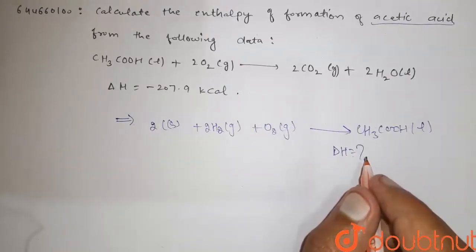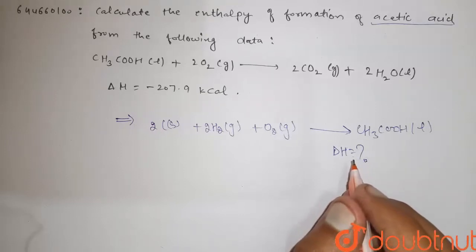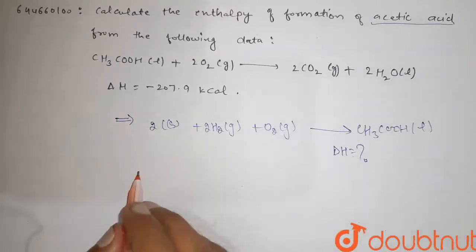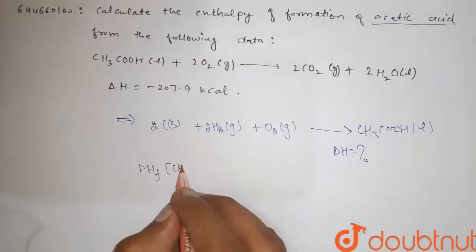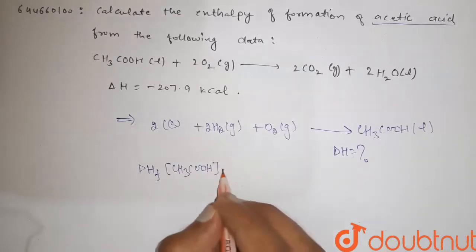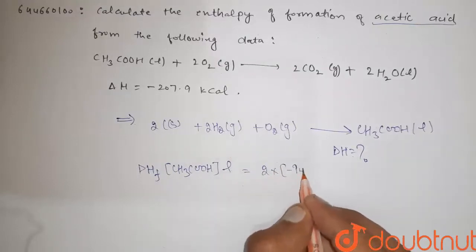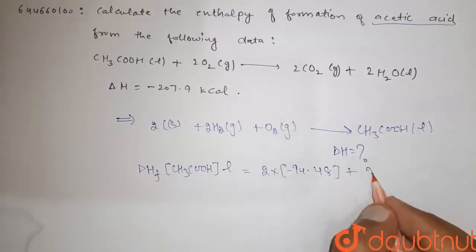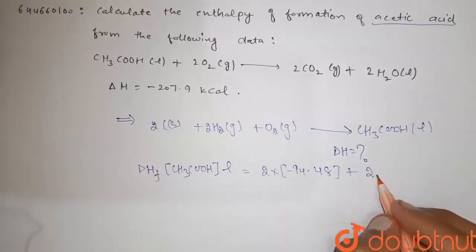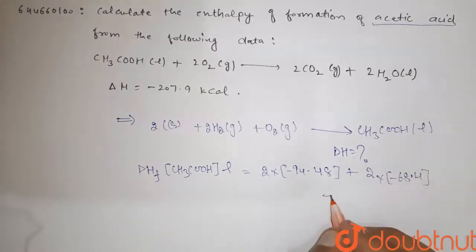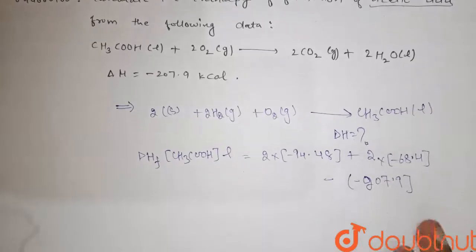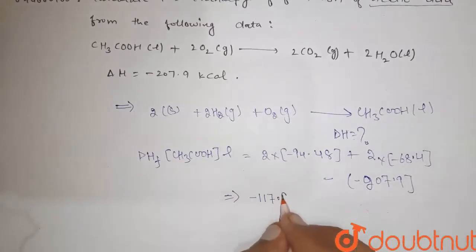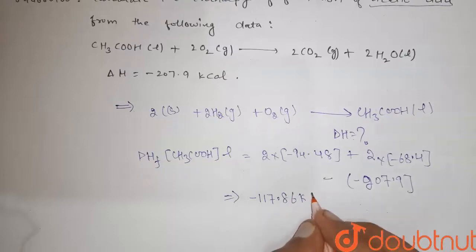This equation can be obtained by multiplying the equation 2 by 2 and adding both then subtracting equation 1. That is, we have the Delta H formation CH3COOH liquid equals 2 into minus 94.48 plus 2 into minus 68.4 minus minus 207.9 that would be equal to minus 117.86 kilocalorie.